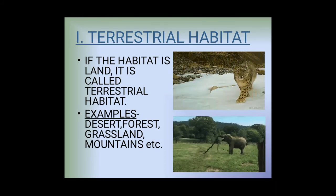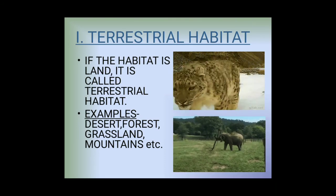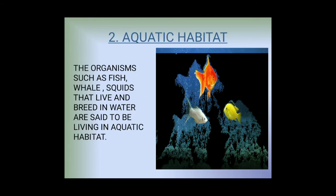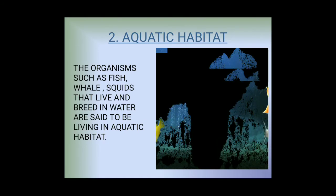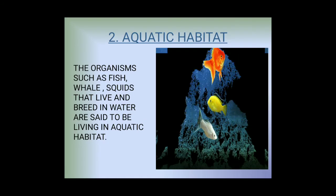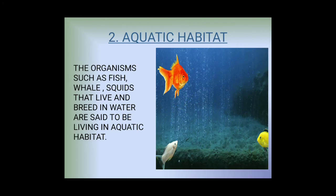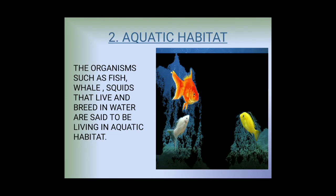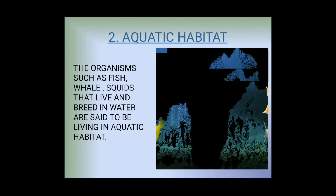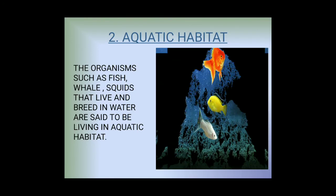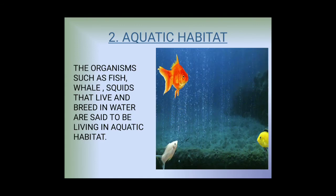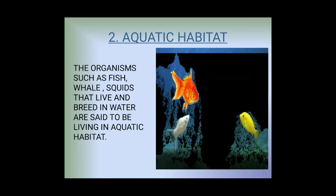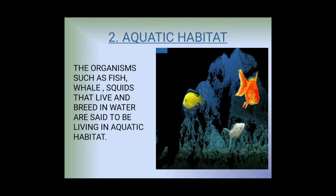The second one is aquatic habitat. Organisms such as fish, whale, and squid that live and breed in water are said to be living in aquatic habitat. The term aquatic relates to water - any animal or plant that lives in water is using aquatic habitat.